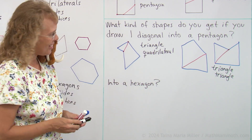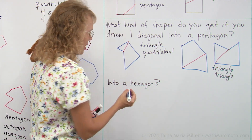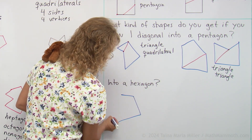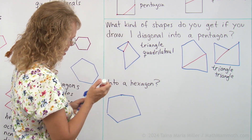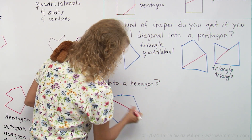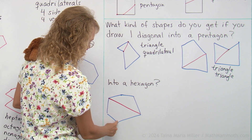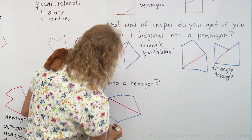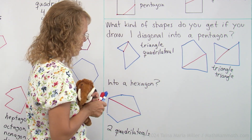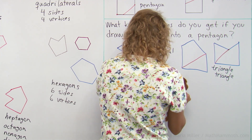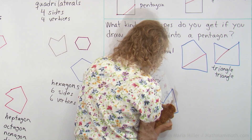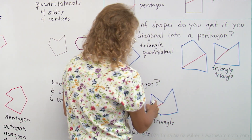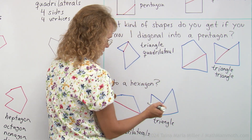Let's do the same for a hexagon. If I draw a hexagon — which means how many sides? Six sides. Just any kind of hexagon. Then draw one diagonal into it from corner to corner — what do we get? One, two, three, four — this is a quadrilateral. And this one: one, two, three, four — a quadrilateral too. So we got two quadrilaterals this time. Mathi draws another hexagon and we get something different this time — a triangle and then a shape with one, two, three, four, five corners, so it's a pentagon.